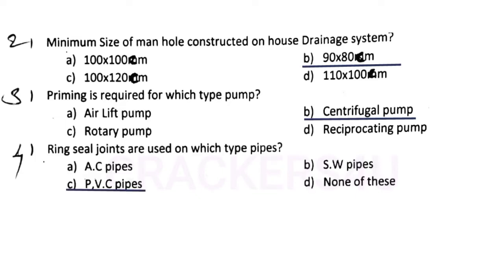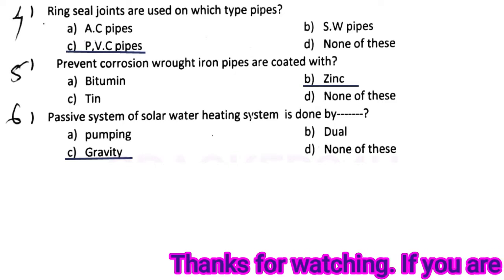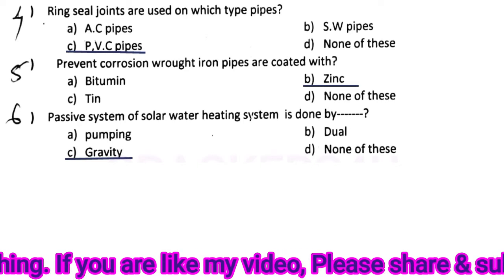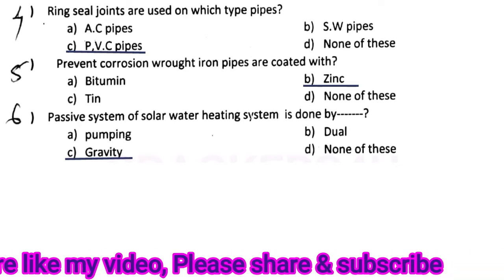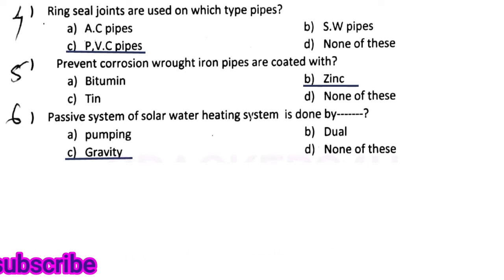Question number four: ring seal joints are used on which type of pipes — answer option C, PVC pipes. Question number five: to prevent corrosion, routine pipes are coated with — answer option B, zinc.